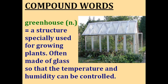A greenhouse is a structure especially used for growing plants. You'll see these used in gardens — I think this greenhouse in the picture has some tomatoes inside it. It's used for growing flowers and vegetables, and a greenhouse is usually made of glass so that the temperature and humidity inside it can be controlled.